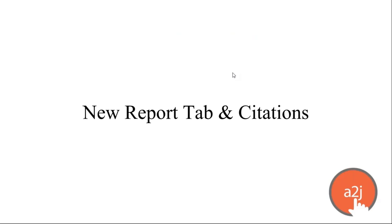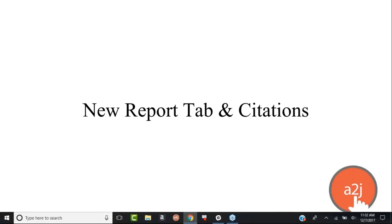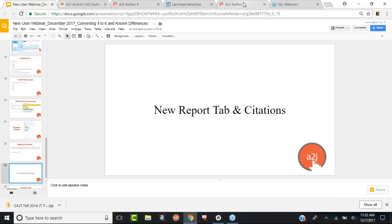We have a new feature grant this year to add a citation tool to A-to-J Author, making it easier for authors to quickly check if the law their form is based on is still good, and to help future authors who inherit guided interviews understand why certain things were done. Now that A-to-J is 13 years old, we're dealing with some old interviews — 2009, 2011 — that need to be updated. The citation tool and report tool will be rolling out shortly, likely in the next code push next week.